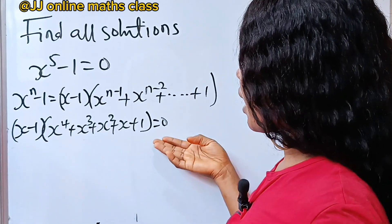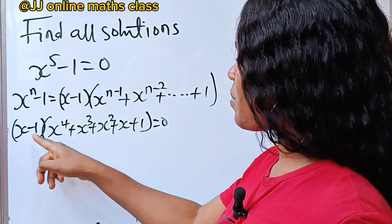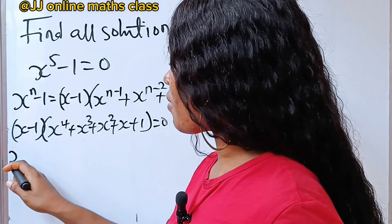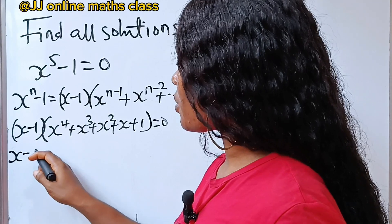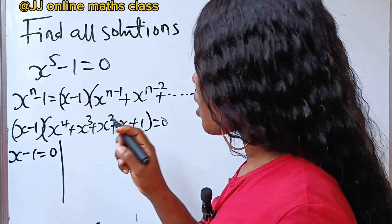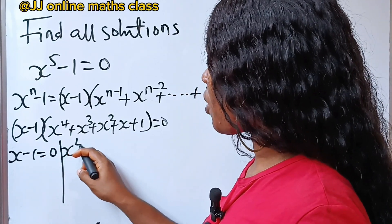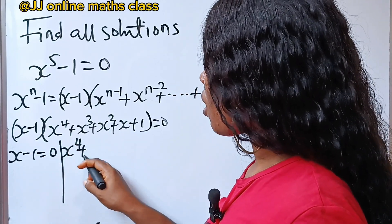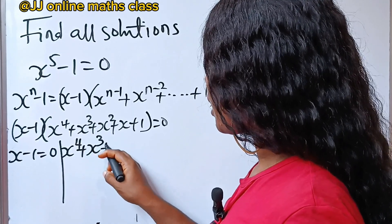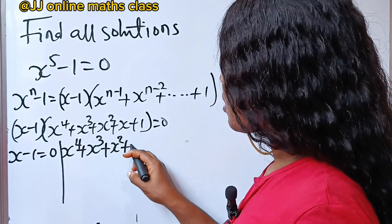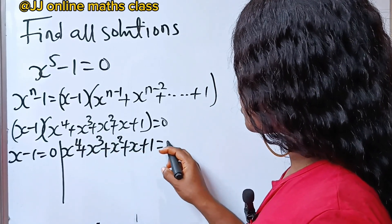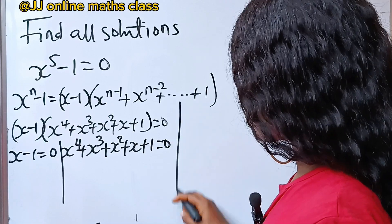So here we have that x minus 1 is equal to 0. And we also have that x to the power of 4 plus x to the power of 3 plus x squared plus x plus 1 is equal to 0.